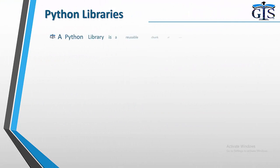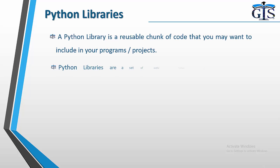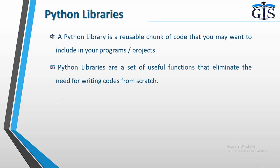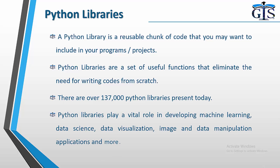Now let's see what Python libraries actually are. A Python library is a reusable chunk of code that you may want to include in your programs or projects. Python libraries are a set of useful functions that eliminate the need for writing code from scratch. There are over 137,000 Python libraries present today, and they play a vital role in developing machine learning, data science, data visualization, image processing, and data manipulation applications.